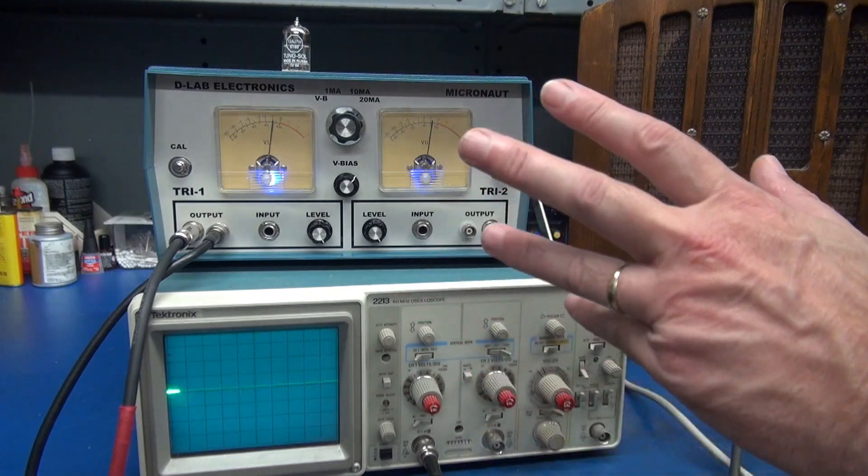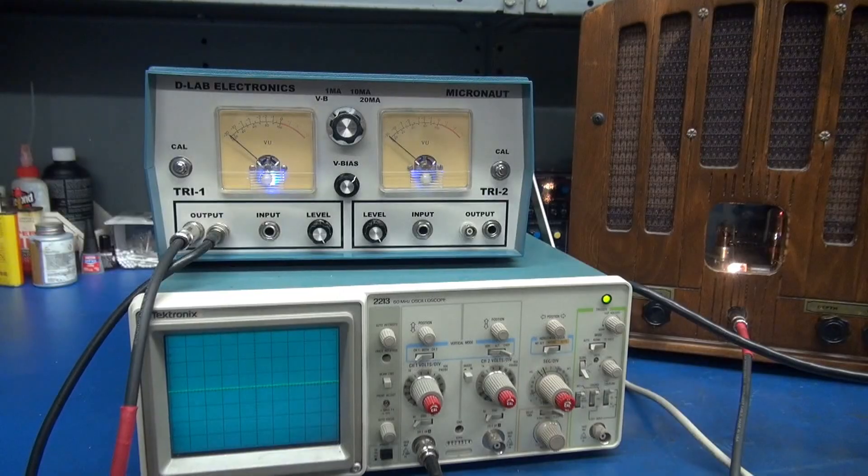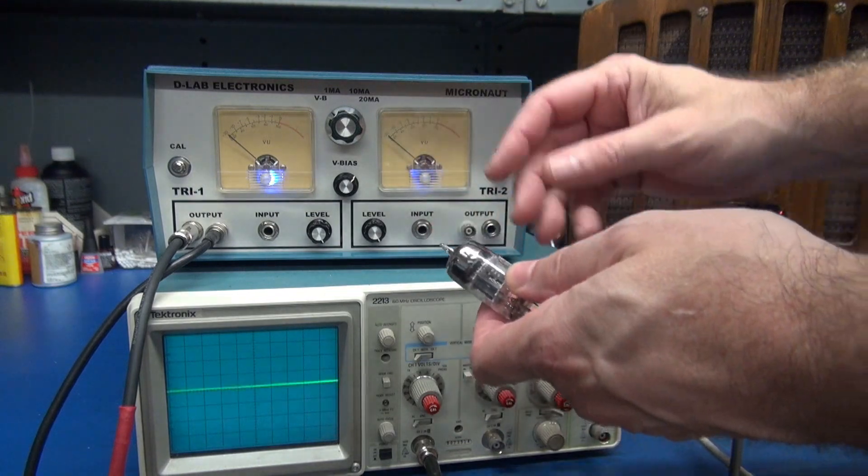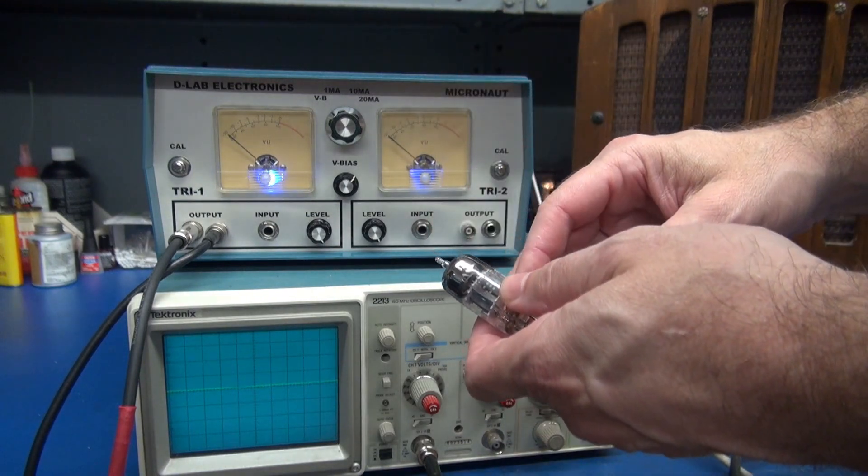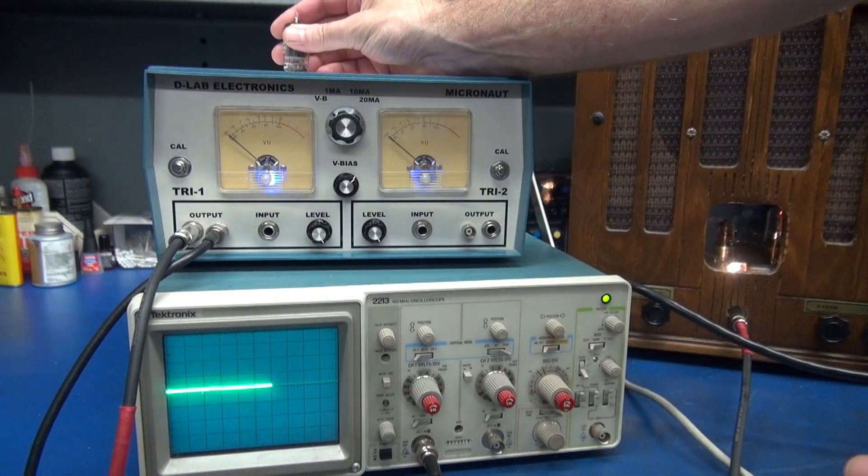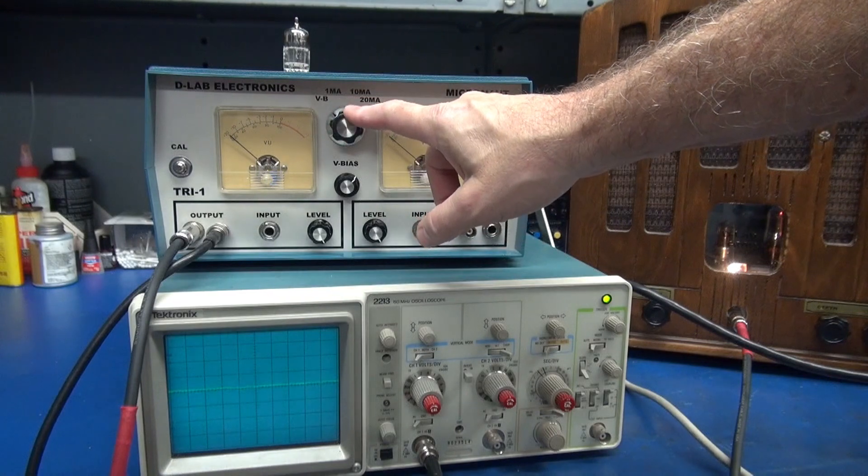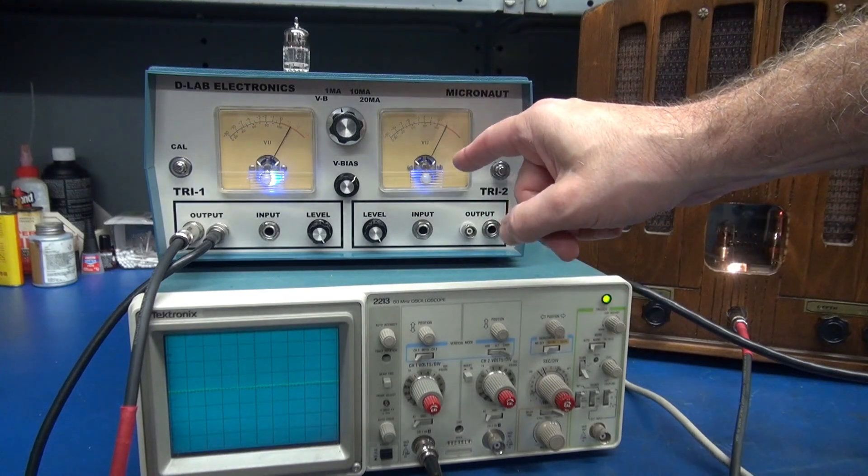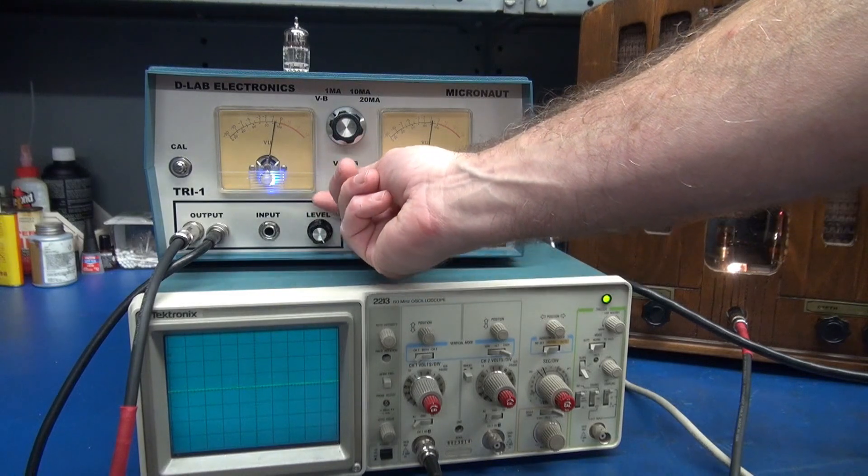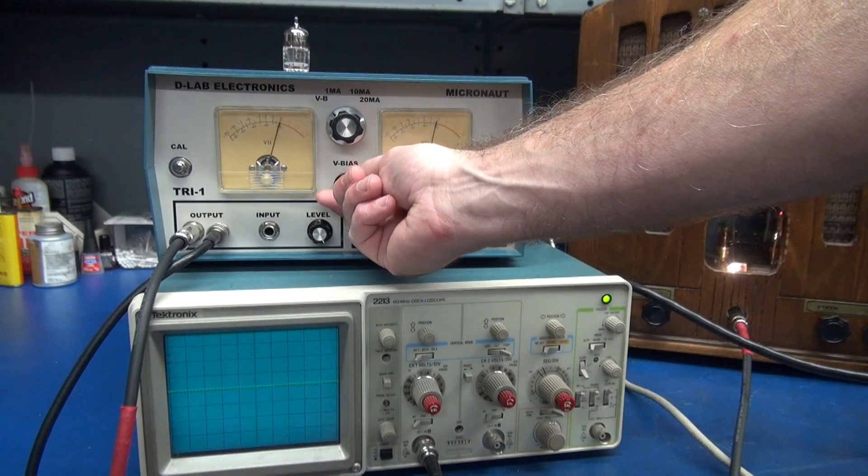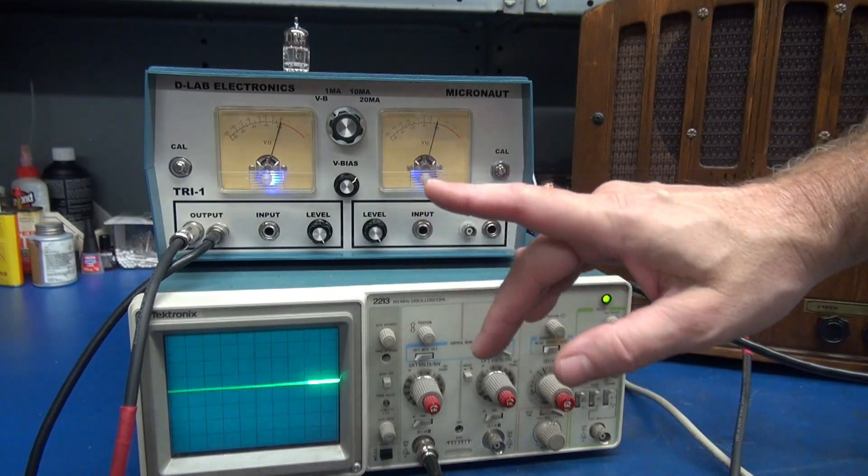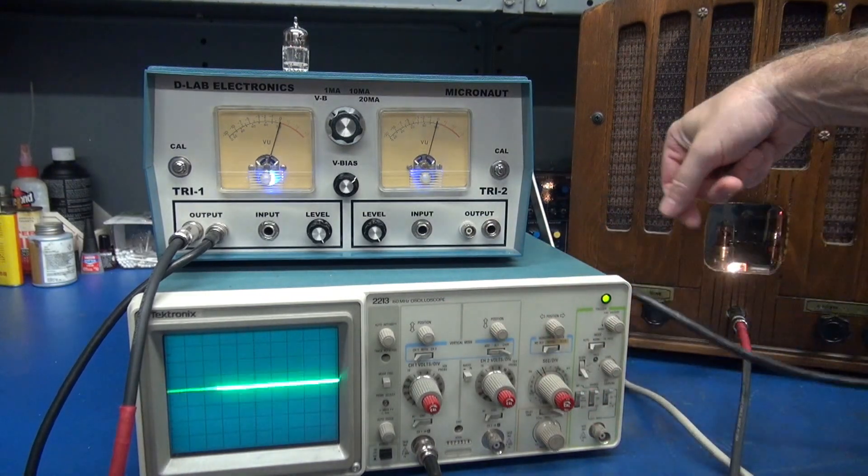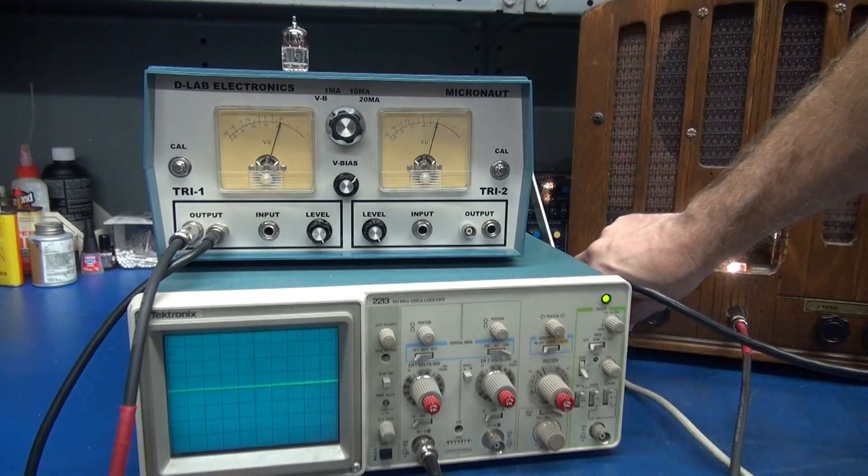Now let's take a look at the variable bias. In this case, we are testing a 12AY7, which this tester was not set up for. Just like I didn't set the gain for a 7025 or a 5751. We'll plug in the 12AY7. We're in variable bias. If I were to say I want to check that at one milliamp, like a 12AX7, you'll see we have way too much gain. So we go to variable bias, and I can dial that right in to my zero point. But keep in mind, it is not calibrated, but it still gives you the opportunity to check these other tubes. Let's see if this one is microphonic. Nope. Good tube.